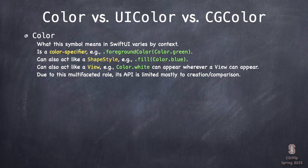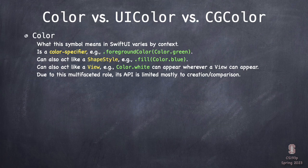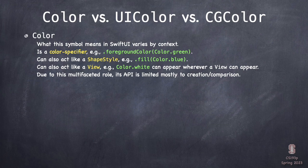The Color struct is pretty cool because it implements a lot of different protocols. It can be used to specify a color like foregroundColor color.green. But it can also, as we saw, be a shape style — so I can say fill of a color and it builds it like a gradient. And it can even act like a view. You can just say color.white, which means a rectangle filled with white because Color also implements the View protocol.